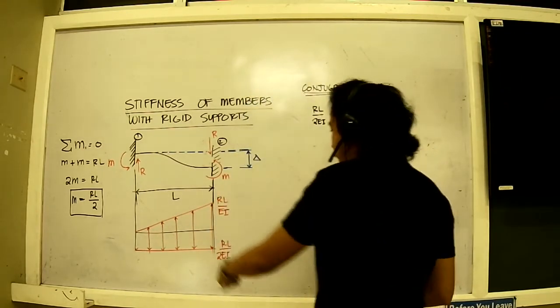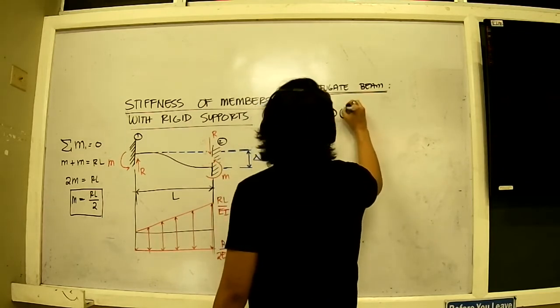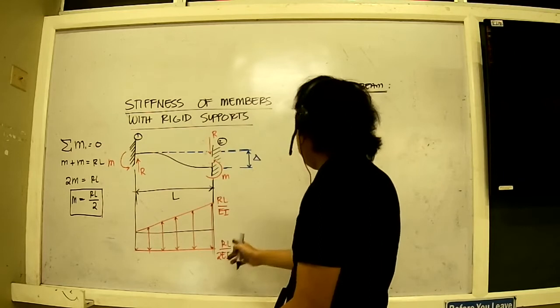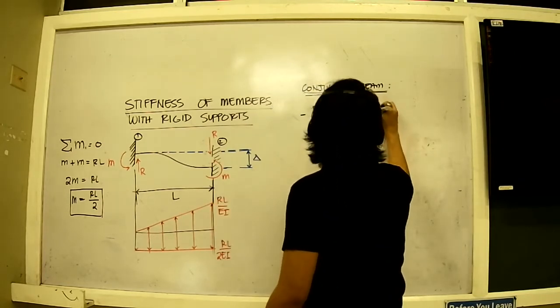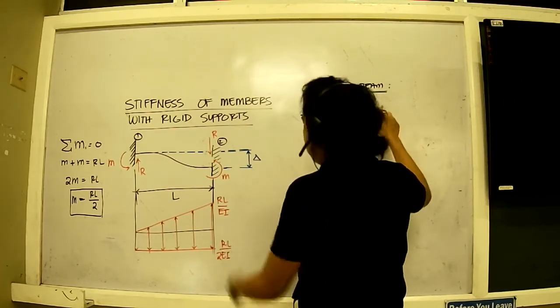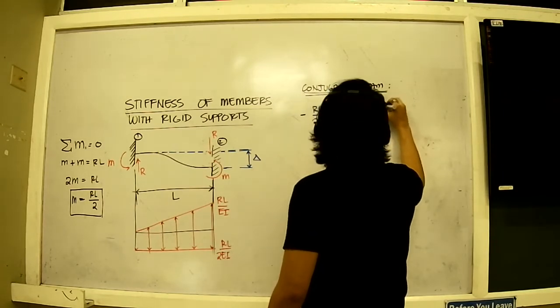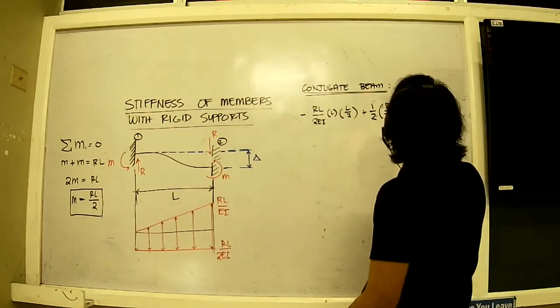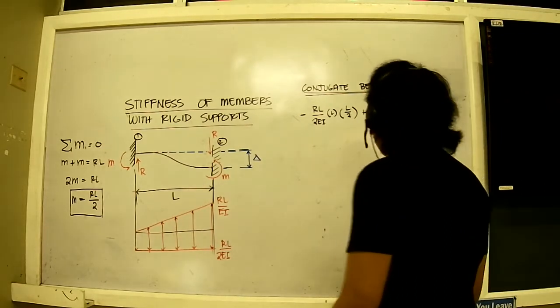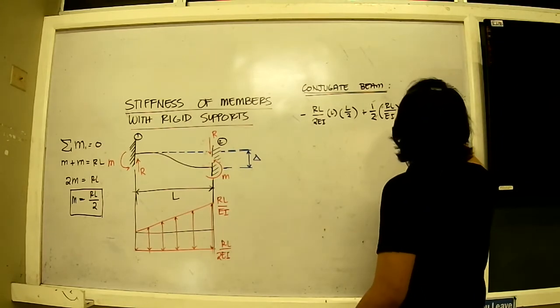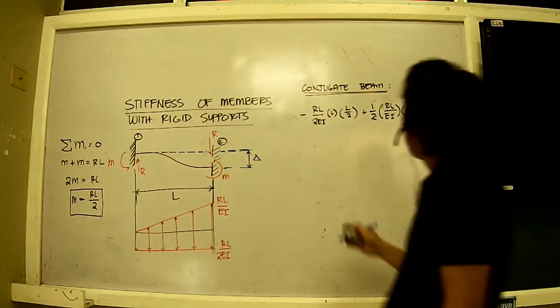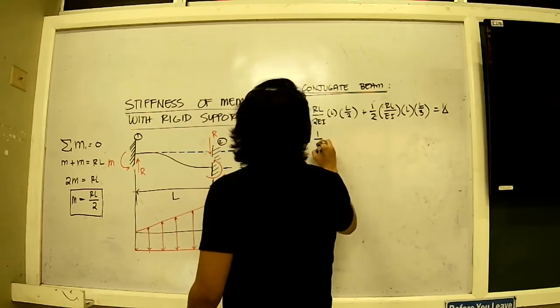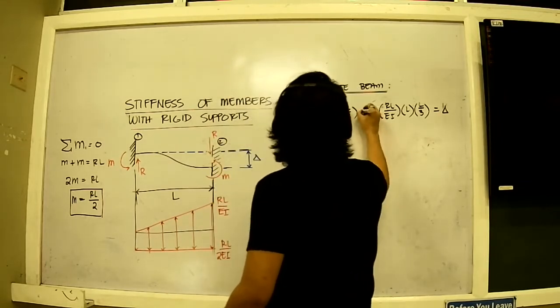For the conjugate beam we have RL over 2EI, area times L times L over 2. This is negative, I can set whatever I want, and then plus RL, that is the area of that. This is triangular, so one-half times height times base times moment arm which is L over 3. That should be all equal to delta. This is equal to negative one-fourth. I'm sorry, I just mixed up the negatives and the positives.